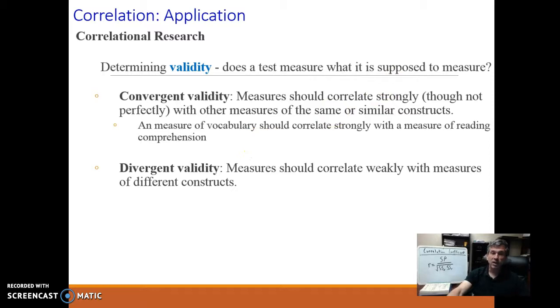The flip side of convergent validity is divergent validity. This is making sure that you're exclusively measuring what you're trying to measure. There aren't any confounds leaking in there. If I create a new IQ test, it should correlate pretty weakly with a measure of self-esteem. If they are strongly, positively correlated, now I'm concerned that I'm accidentally measuring both at the same time, and I don't know if a high score represents high intelligence, high self-esteem, or both.